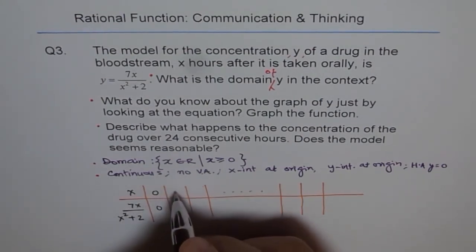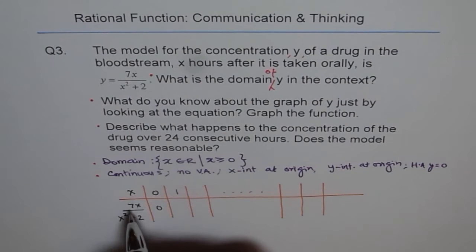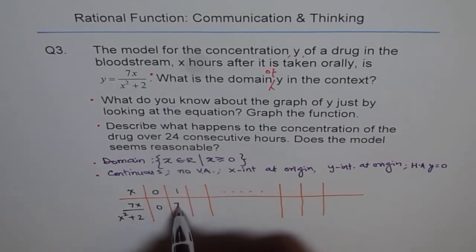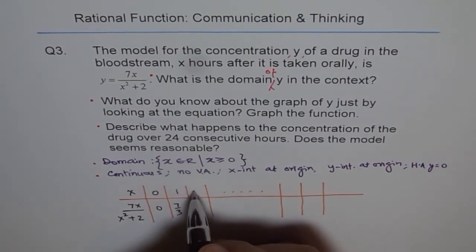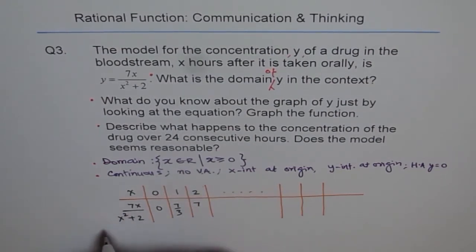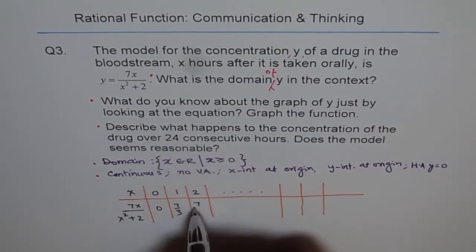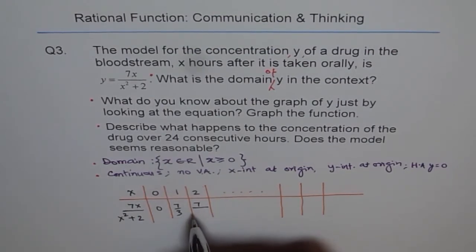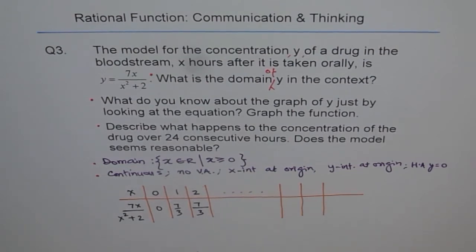And if I write 1 here, I get 7 divided by 3. If I put 1, 1 squared here, I get 7 divided by 3. You can always convert to decimals to graph accurately. If I write 2 here, so it becomes 7 times 2, and 2 squared is 4, 4 plus 2 is 6. 2 will get cancelled. So, I will get again the same value, 7 over 3. So, I'll get 7 over 3. Got it? The same value.